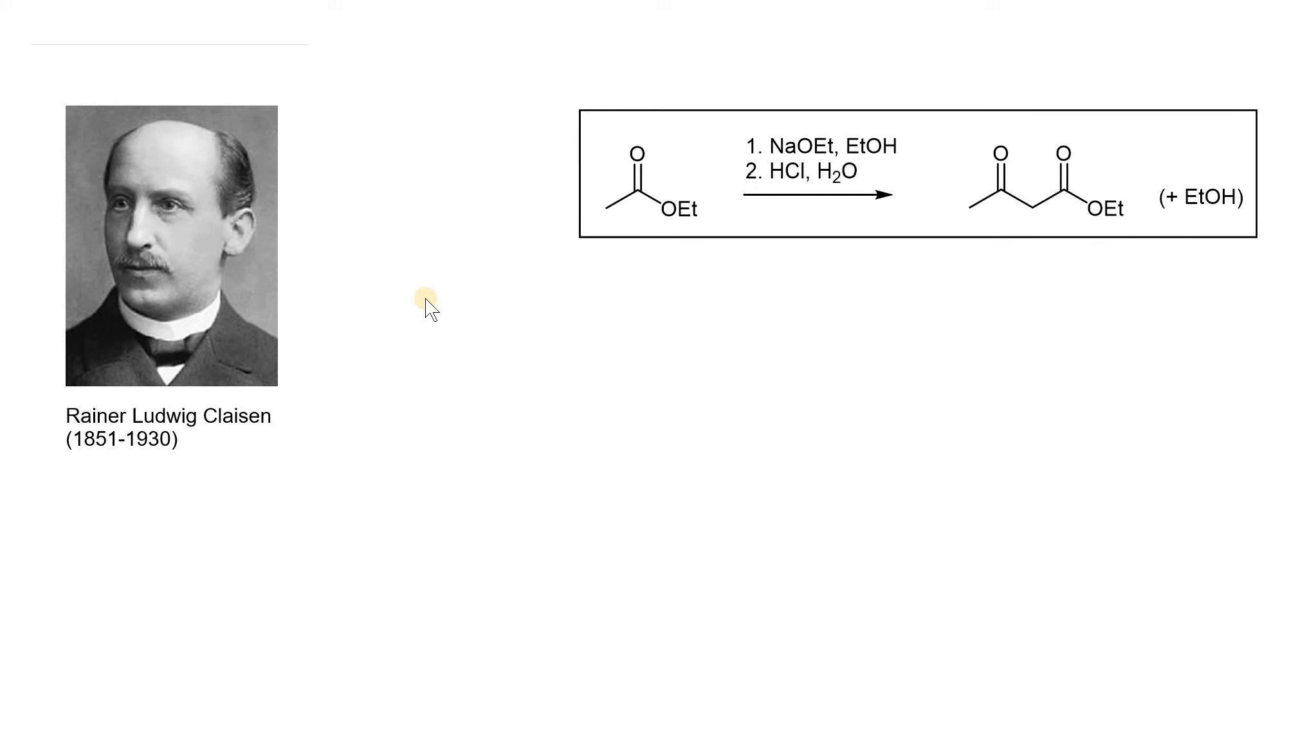The simplest Claisen condensation reaction we can take a look at is with ethyl acetate. This is an ethyl group, and this is the acetate portion, and this is an ester compound. So with ethyl acetate, what we can do is expose it to sodium ethoxide dissolved in ethanol, and following up with an aqueous workup.